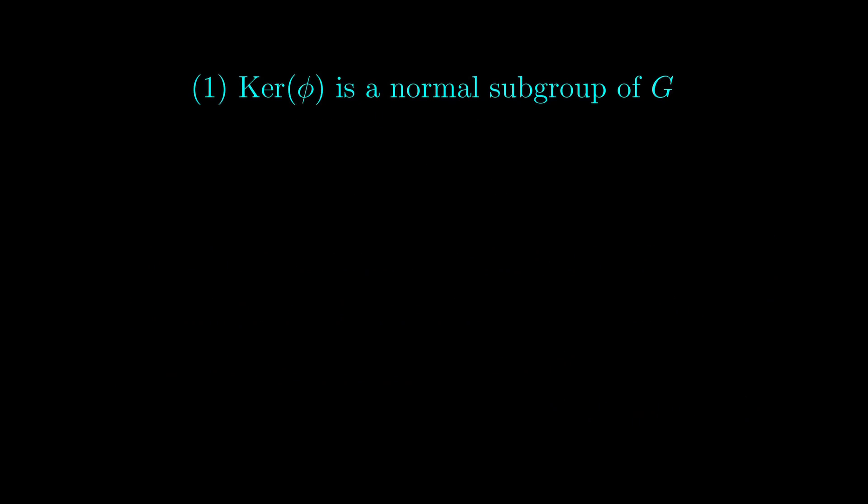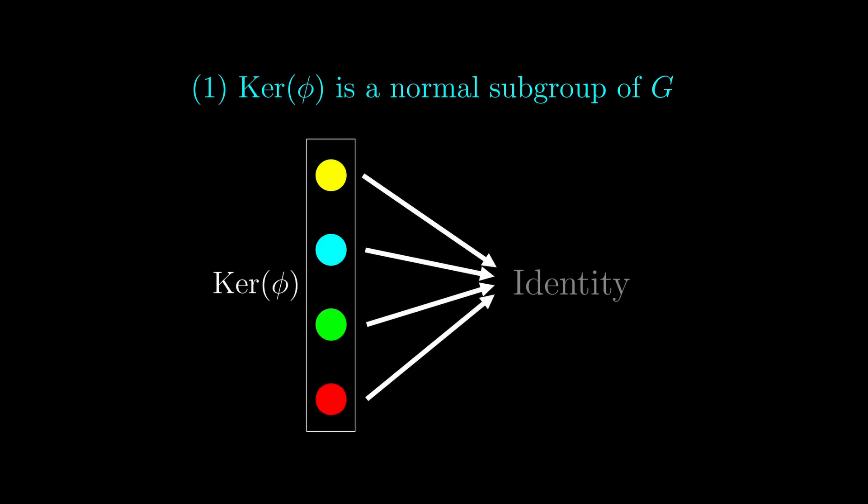The first statement can be understood as follows. By definition, the kernel is the set of all symmetries that gets mapped to the identity of the other group. As a result, the kernel actually acts like the identity, which looks the same in all possible perspectives, because it is just not doing anything. So intuitively, we can see why the kernel is a normal subgroup.